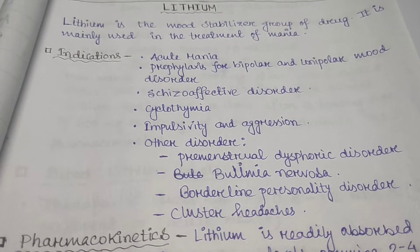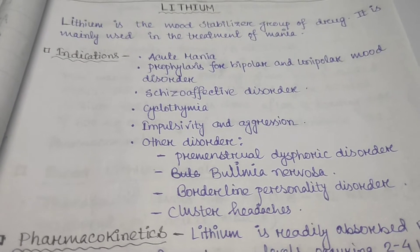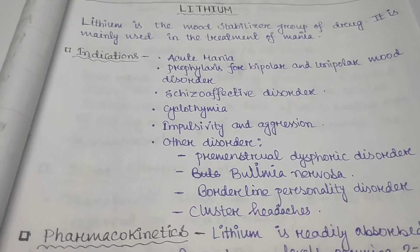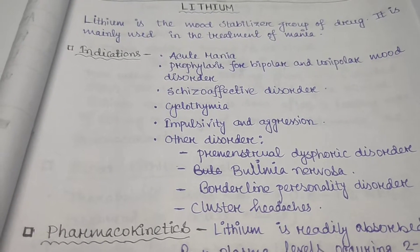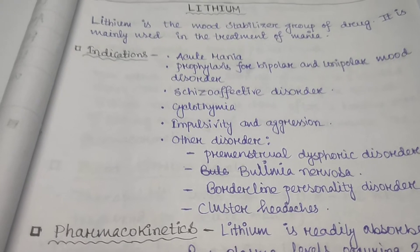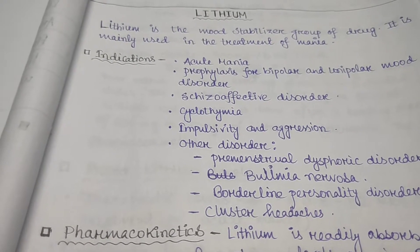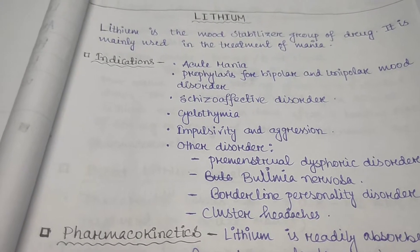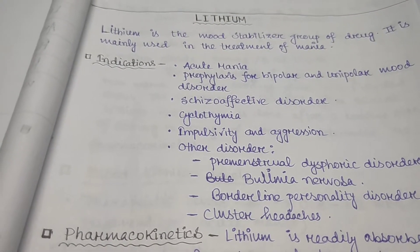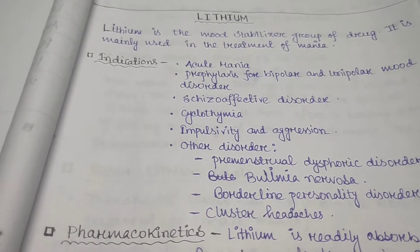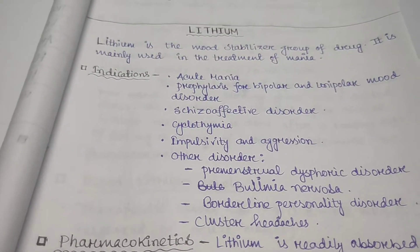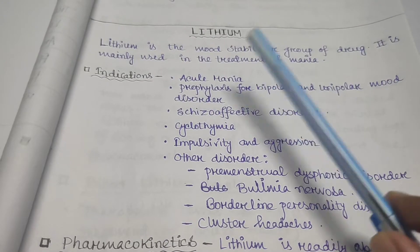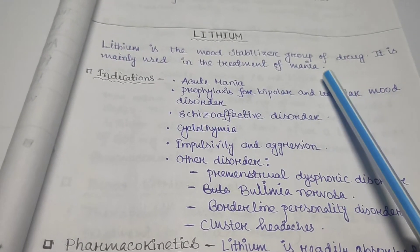Hello my dear students, today I will take the class on the subject of mental health nursing. Today's topic is the most common psychiatric drug which is mainly used in the treatment of mania — this is lithium. Lithium is the mood stabilizer group of drug and it is used for the treatment of mania.